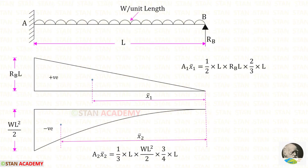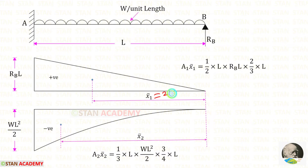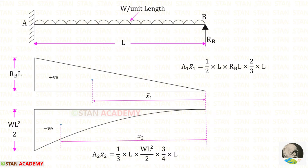Now let us find Area1·x̄1. This is a triangle with area formula half × B × h, where B = L and height = Rb·L. The centroid distance is 2/3 × L. Now let us find Area2·x̄2. This is a second-degree parabola with area formula 1/3 × B × h, where B = L and height = WL²/2. The centroid distance is 3/4 × L.